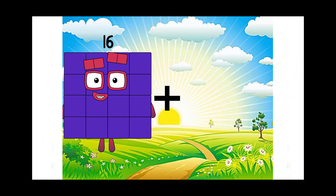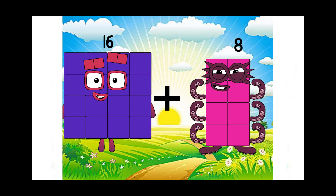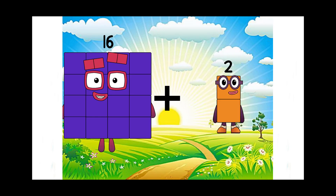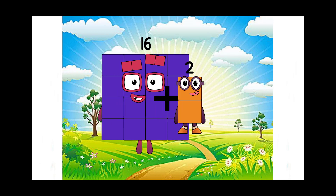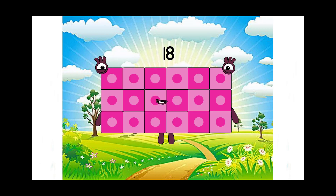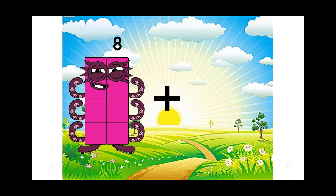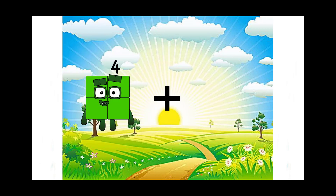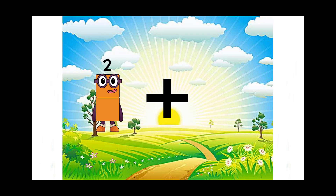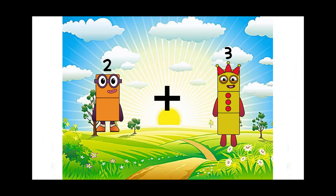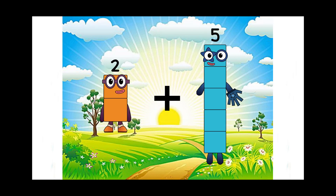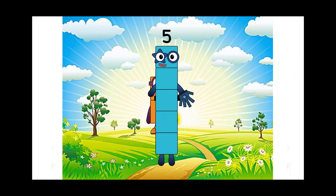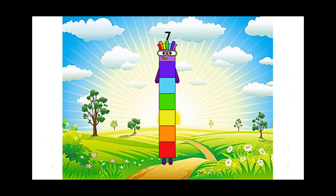16 plus 2 equals 18. 2 plus 5 equals 7. 7 is a rainbow number — stunning.